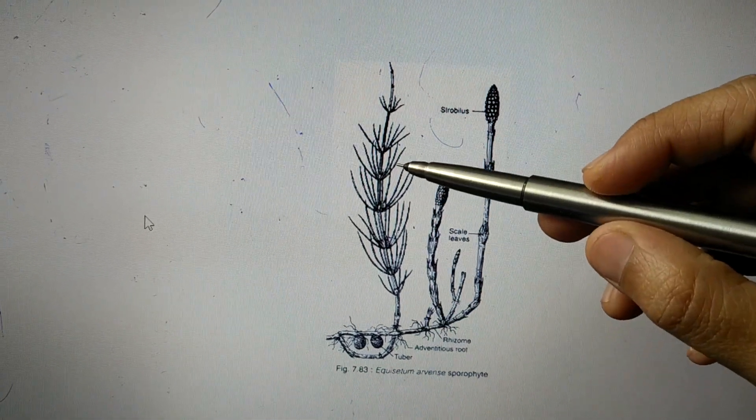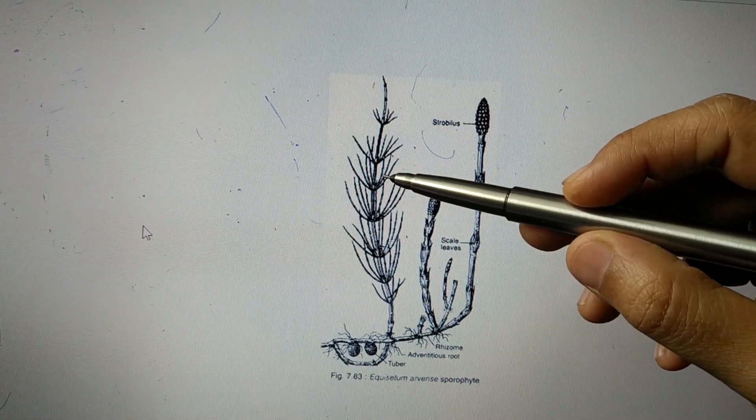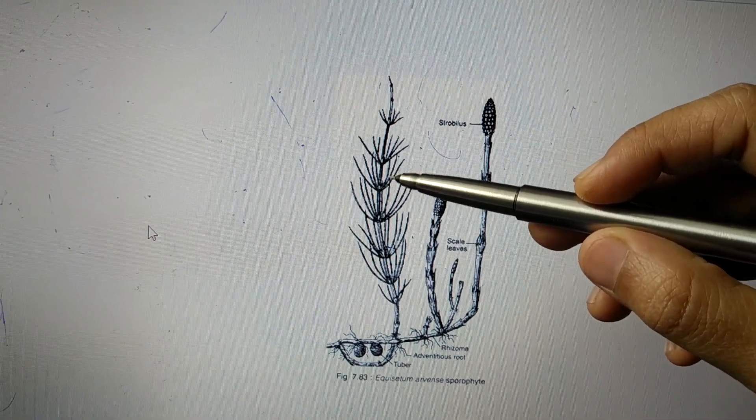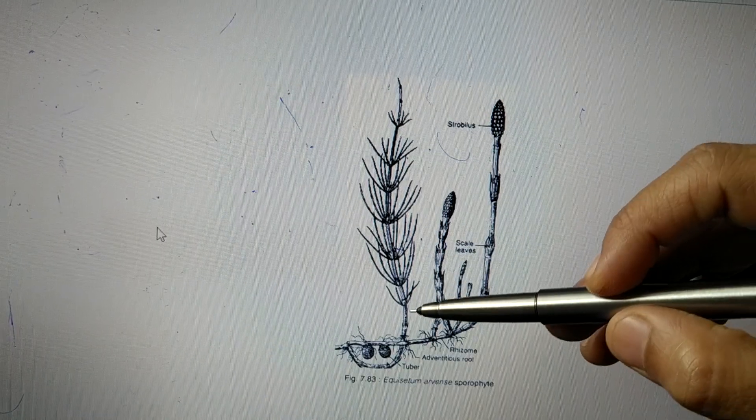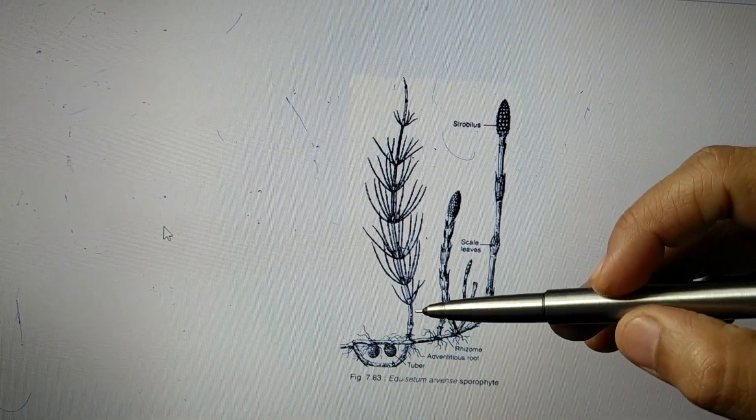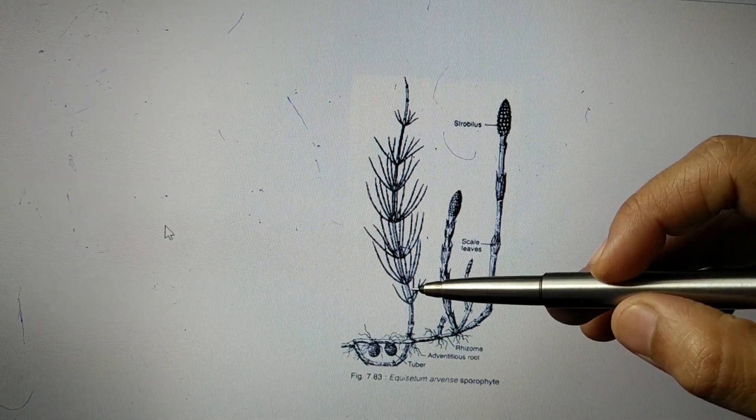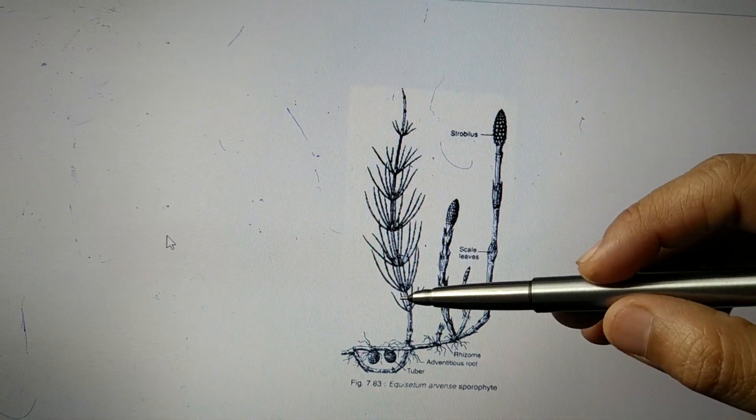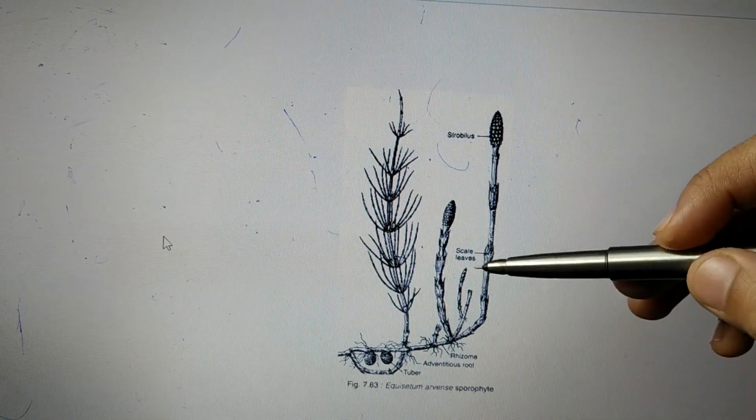The aerial shoot is erect, and the stem shows dimorphism, meaning two different types of stems are present: one is vegetative and another is fertile.